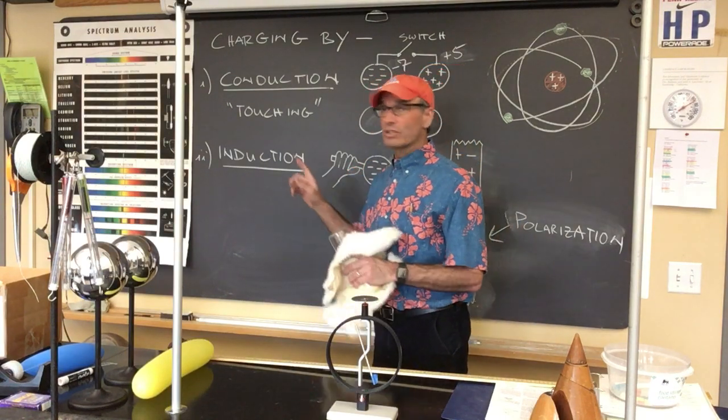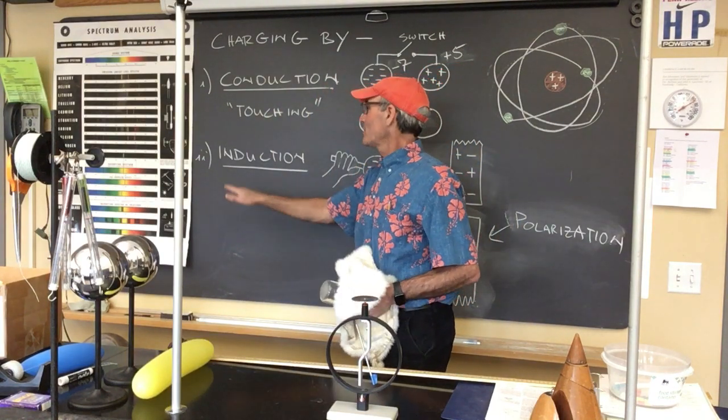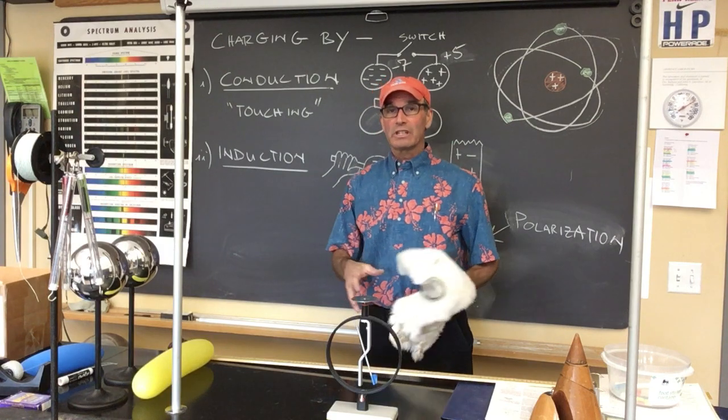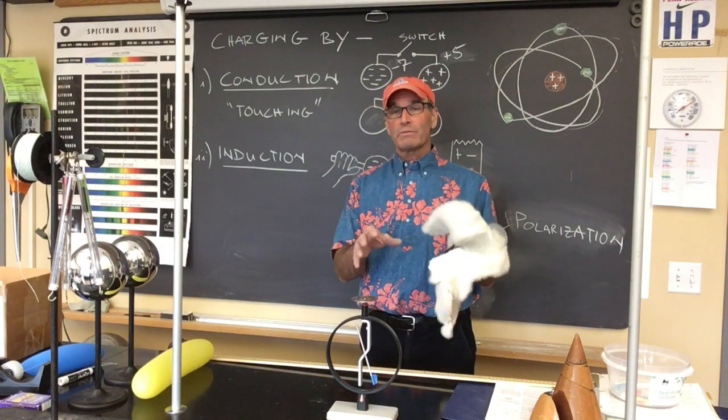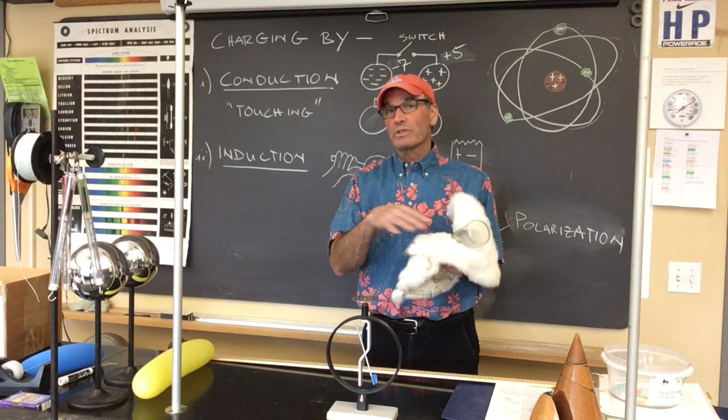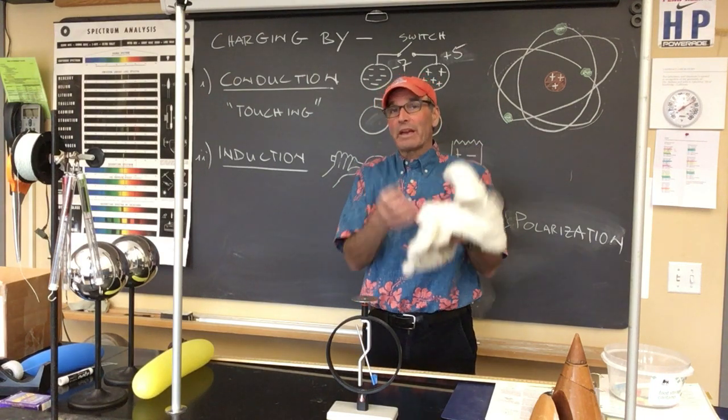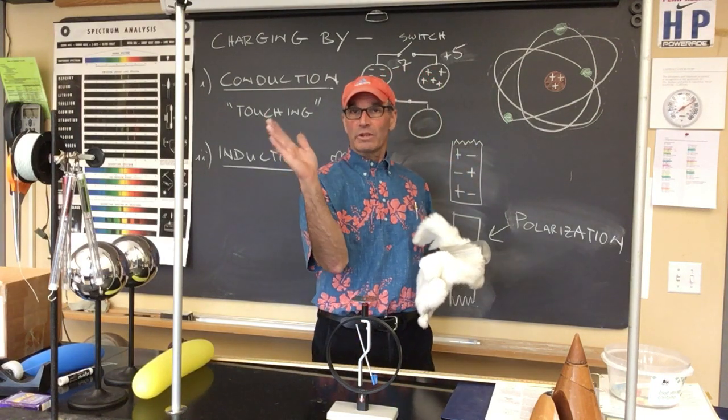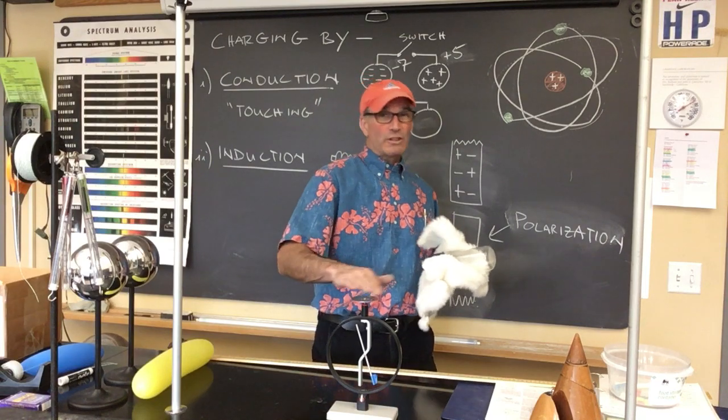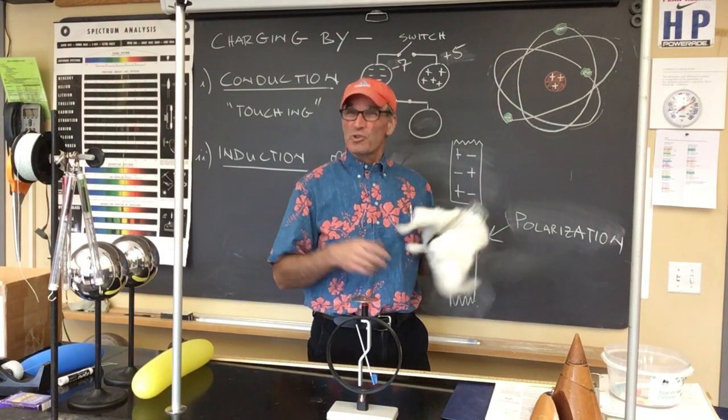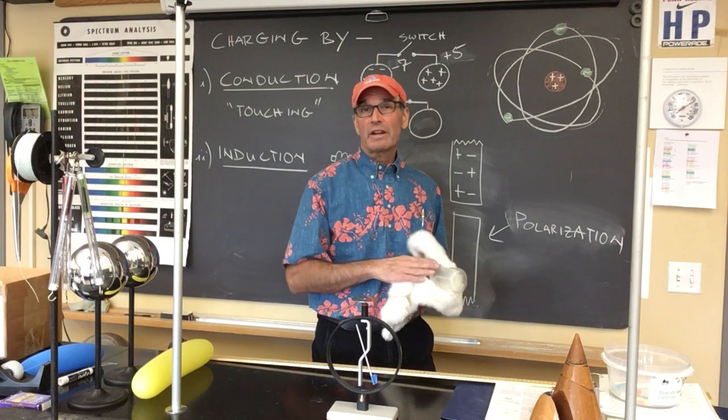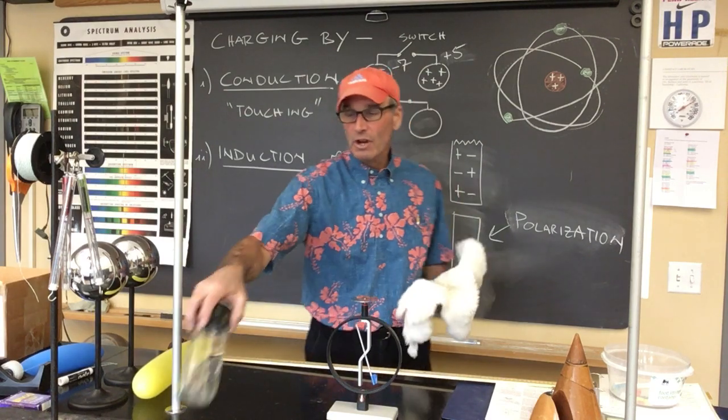We call that charging by induction. So we're causing the charge to distribute or occupy in greater numbers on the conducting plate. We're pulling them out. And notice that the vein wants to return to normal, so that lower portion is technically neutral, where the lion's share of the electrons are on that upper conducting plate.